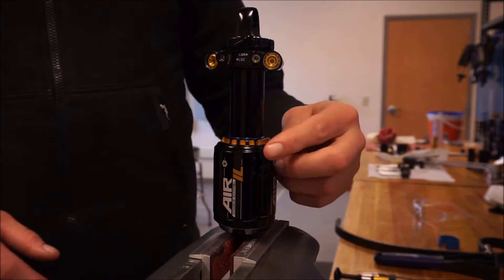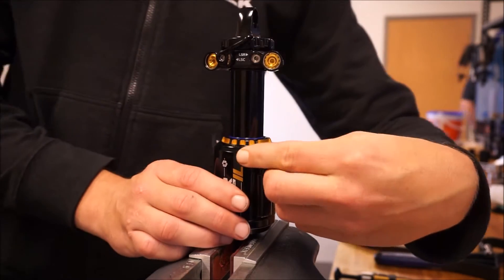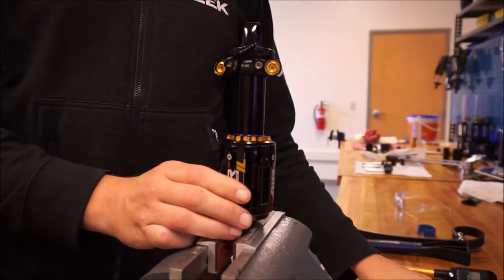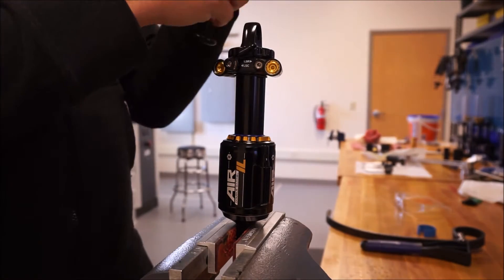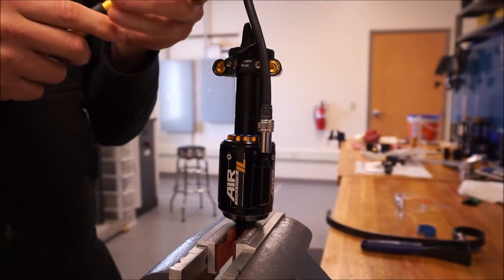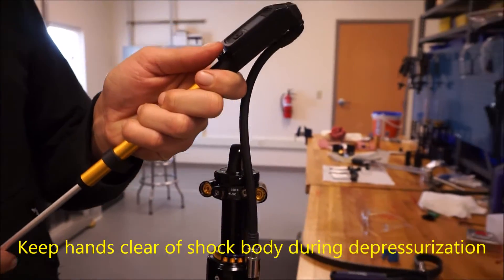So the first step we want to do is remove the air valve cap, screw your shock pump to it, and then slowly bleed off your air.